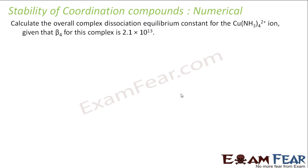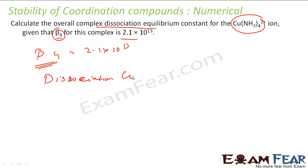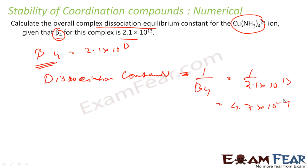Now a numerical example: the overall association equilibrium constant β₄ for a complex is given as 2.1×10¹³. We need to find the dissociation constant. The dissociation constant is the reciprocal of the association constant, so it equals 1/β₄ = 1/(2.1×10¹³) = 4.7×10⁻¹⁴. This question tests understanding of the terms association constant and dissociation constant.